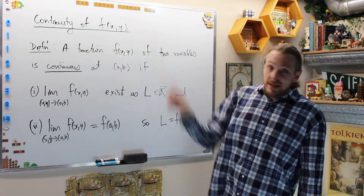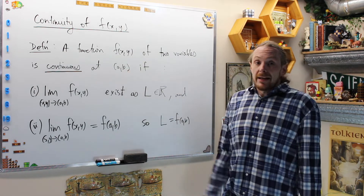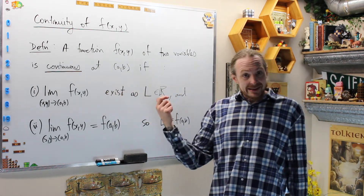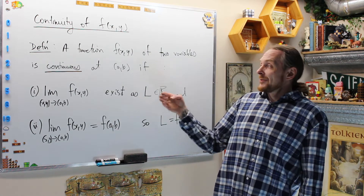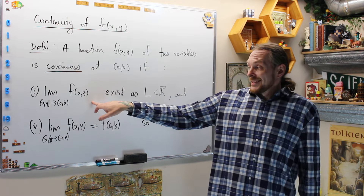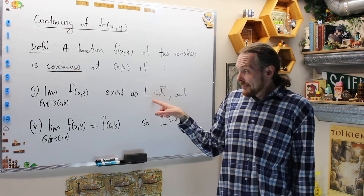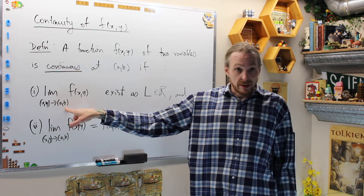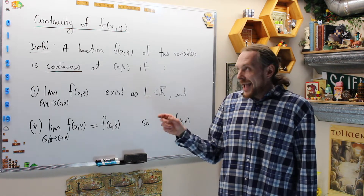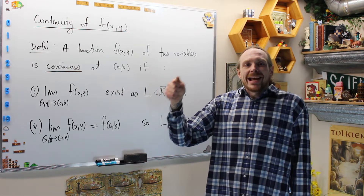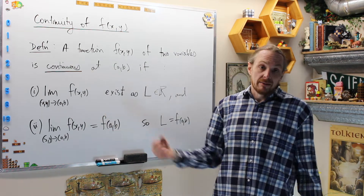For continuity of a function of two variables x and y, we say f is called continuous at a point (a, b) under two conditions. First, the limit must exist at the point — that's the definition we dealt with last time. Second, just like in calculus of one variable where f(x) must approach f(a) as x approaches a, that limit must not only exist but also equal f(a, b). That's our definition of continuity.